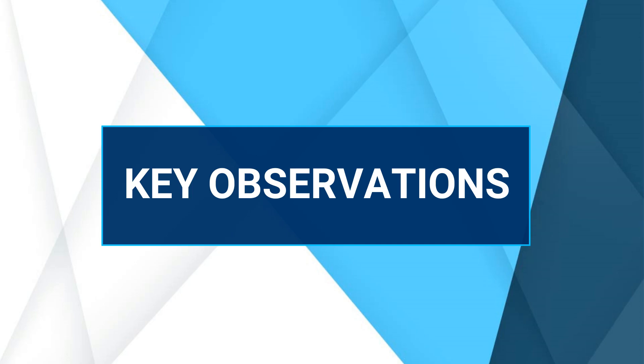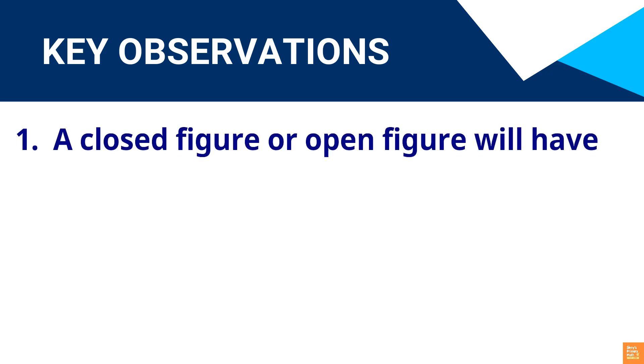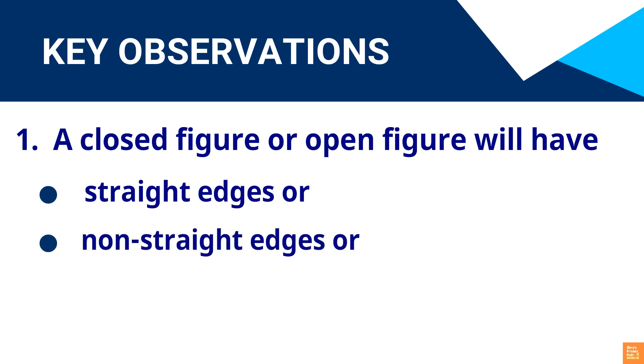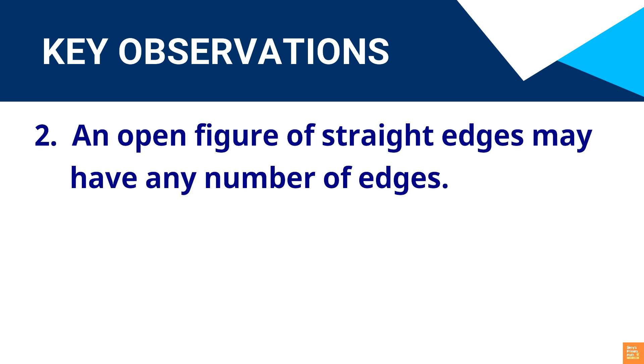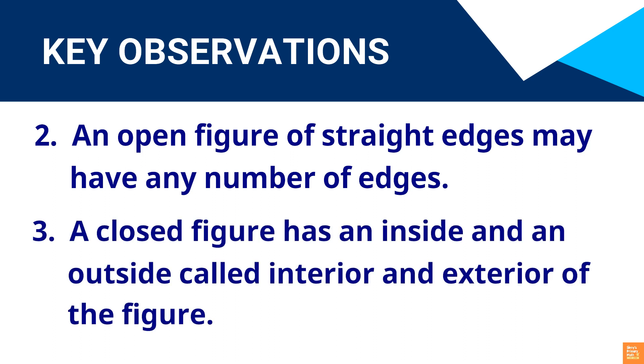Key observations: A closed figure or open figure will have straight edges or non-straight edges or both. An open figure of straight edges may have any number of edges. A closed figure has an inside and outside called interior and exterior of the figure. Children's judgment about whether a figure is open or closed develops visual discrimination, allowing them to identify and recognize the likenesses and differences of figures.